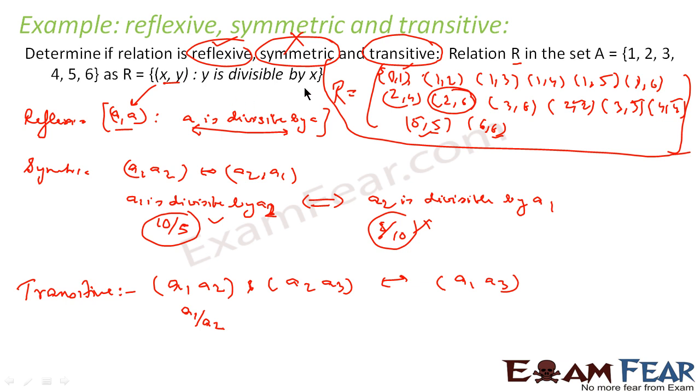Y is divisible by X. Sorry, it is A2 by A1. (A1, A2), that is, A2 is divisible by A1. A2 is divisible by A1, correct? And (A2, A3) implies A3 by A2. If these both are true, if both are true, if you just multiply these two numbers, what you get? A2 by A1 times A3 by A2. What you get? A3 by A1. That means A3 is divisible by A1. Correct?